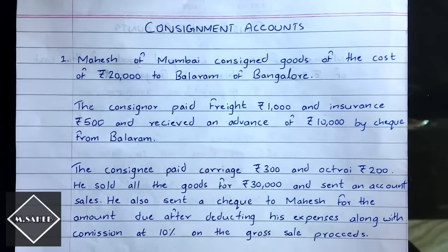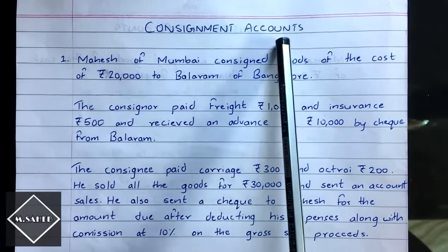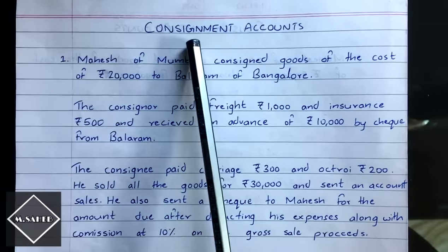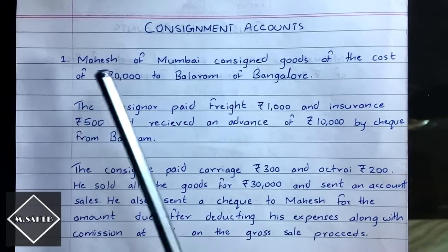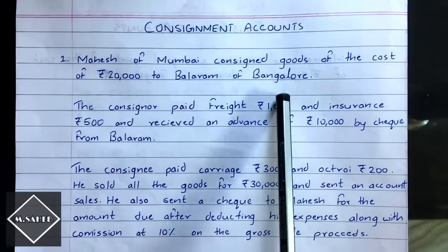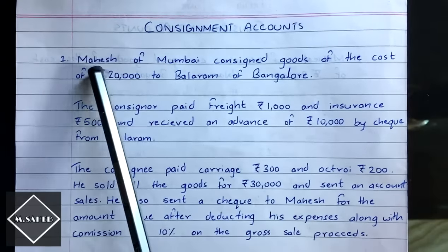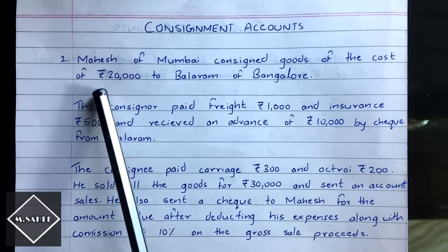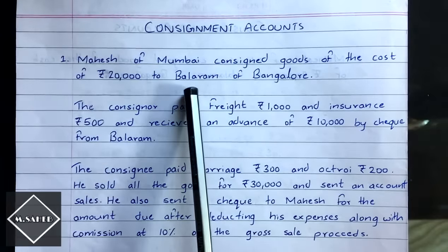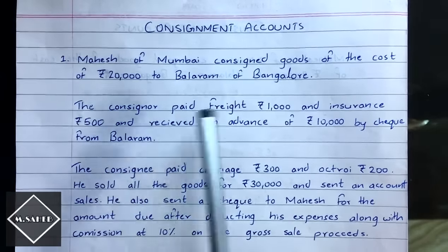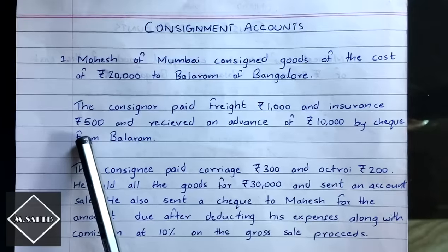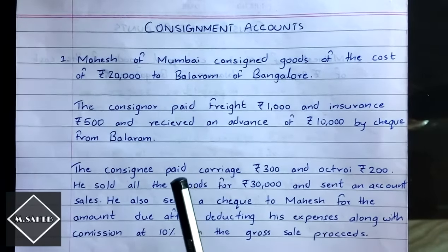In this video we are going to solve a problem on consignment. Mahesh of Mumbai consigned goods costing rupees 20,000 to Balaram of Bangalore. So Mahesh is the consigner and Balaram is the consignee. The consigner paid freight of rupees 1,000 and insurance of rupees 500, so Mahesh incurred some expenses to send the goods to the consignee.